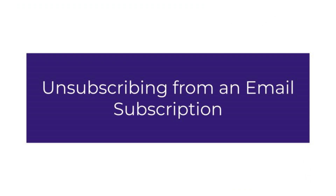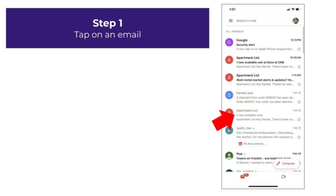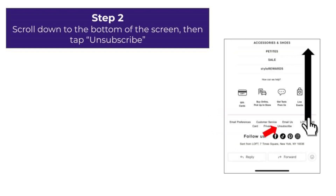Next, we will learn how to unsubscribe from an email subscription. An email subscription is when you are on a company or organization's email list where they frequently email you about upcoming sales, coupons, or other important information. When you unsubscribe from an email list, the company will stop emailing you. First, tap on an email from an organization or company that frequently emails you. Scroll down to the bottom of the screen, then tap the word Unsubscribe. The unsubscribe word can be tricky to find on occasion and is usually in a small text size.